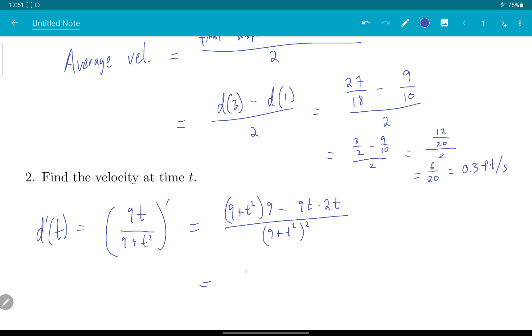What do we get? We get 81 minus 9T squared minus 18T squared. Same denominator. It's rarely useful to expand the denominator when you've just done a quotient rule. 81 minus 27T squared, all over 9 plus T squared, all squared.